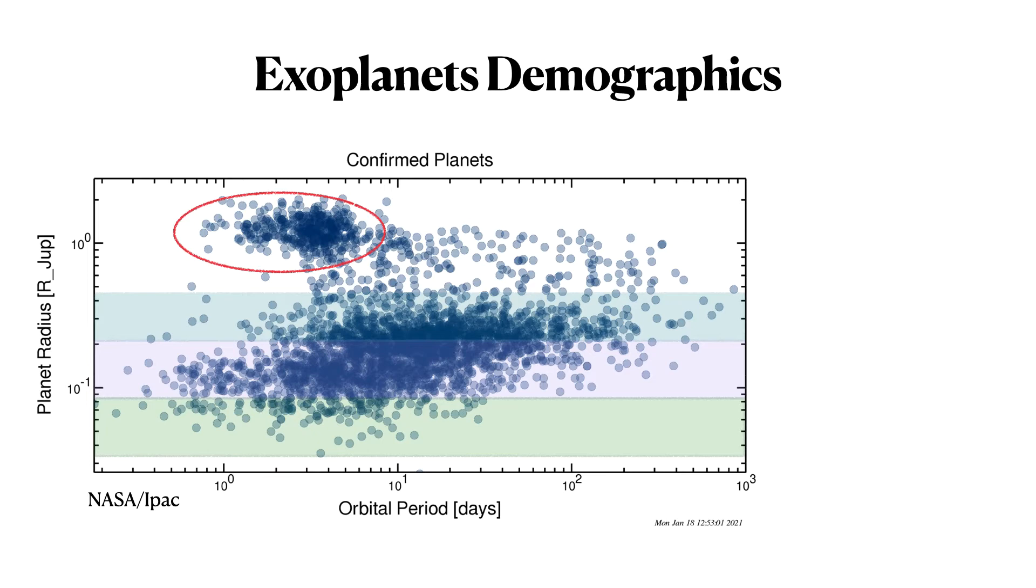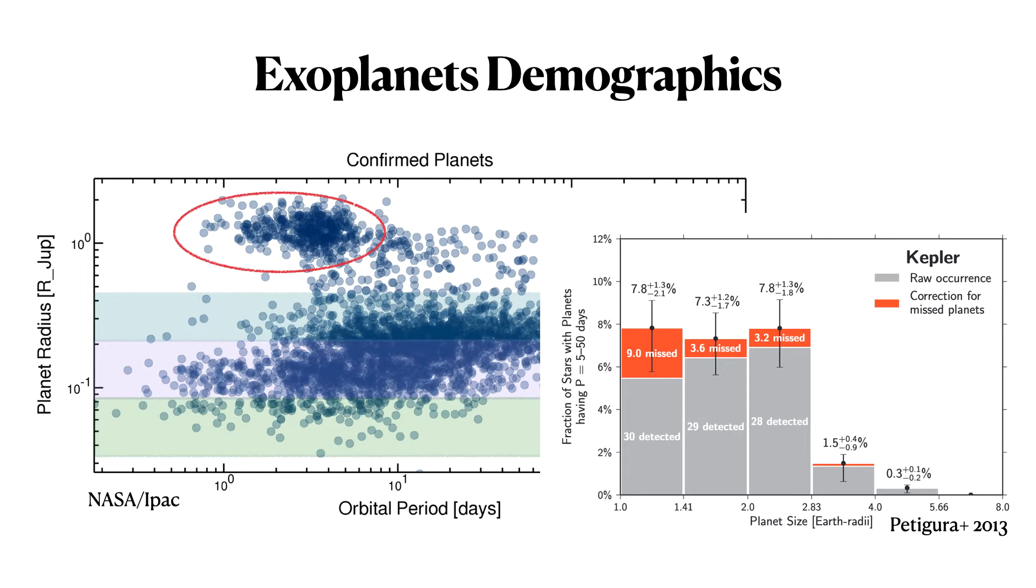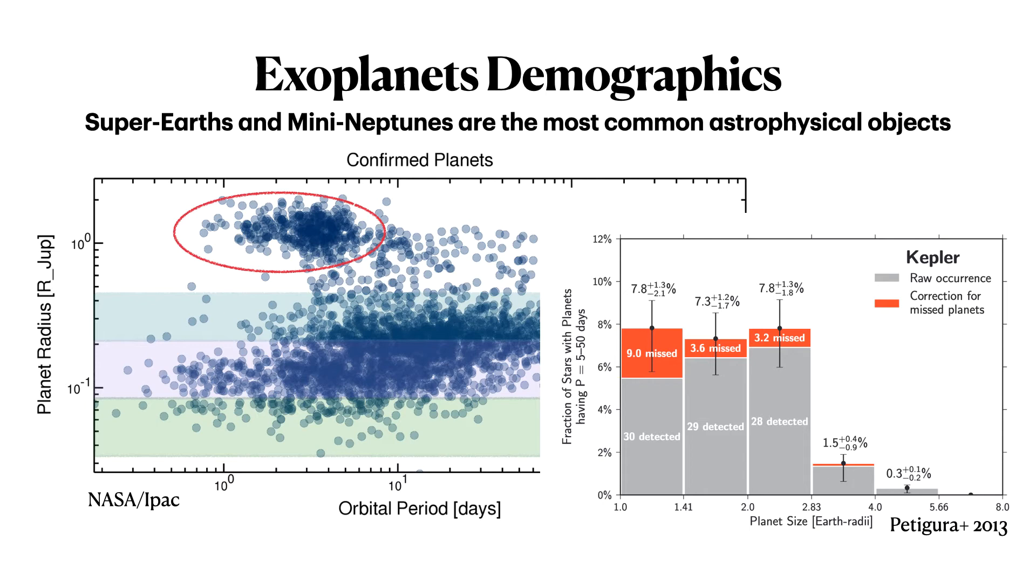But in any case, despite the difficulties of observing these planets, once we detrend this space and we've taken all the biases out of our observations, we determine that, and it's been now almost a decade, that these super-Earths and mini-Neptunes are the most common astrophysical objects. And I would like to argue that if we understand how they formed, we have a very good chance of understanding how planets form in general.